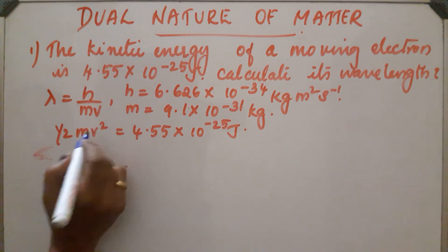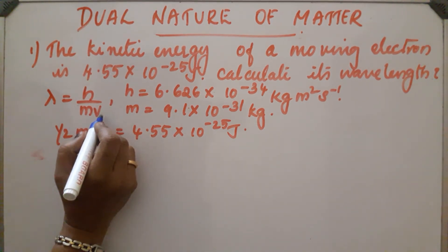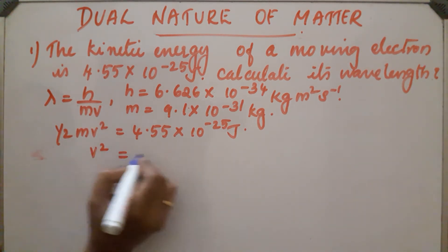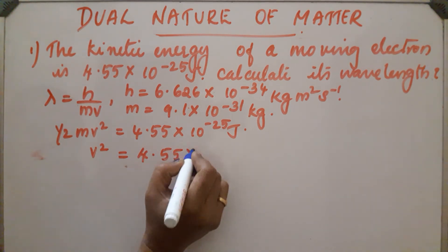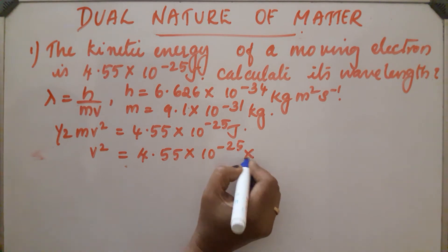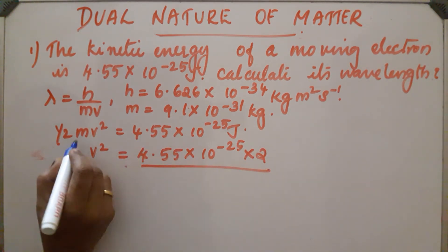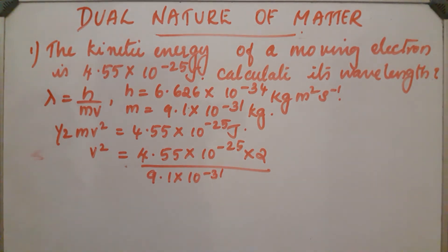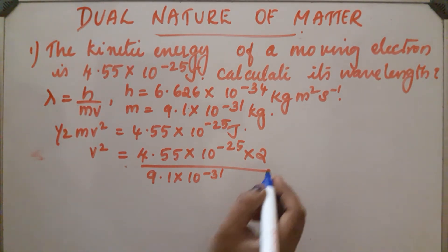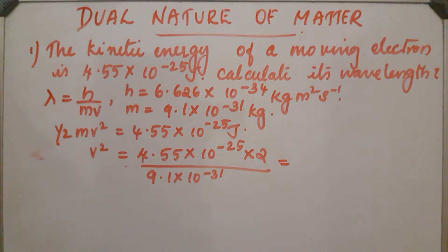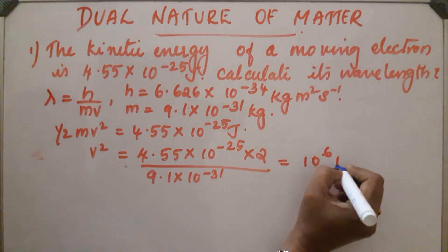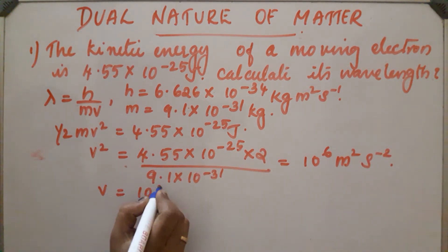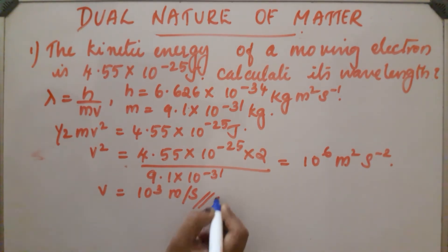We have to calculate v, the velocity, before we can calculate lambda. v² = (4.55 × 10⁻²⁵ × 2) divided by mass of the electron 9.1 × 10⁻³¹ kg. After calculation the value is 10⁶ m²s⁻². So v = 10³ meter per second.